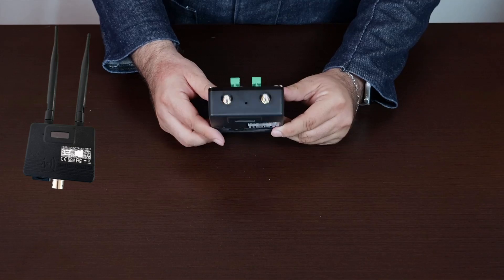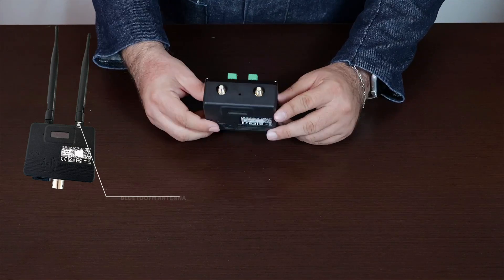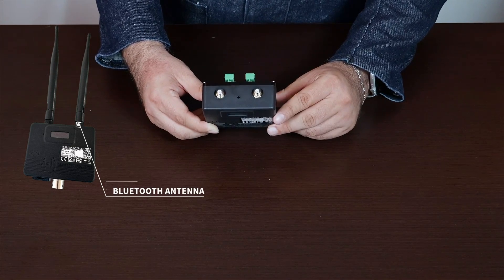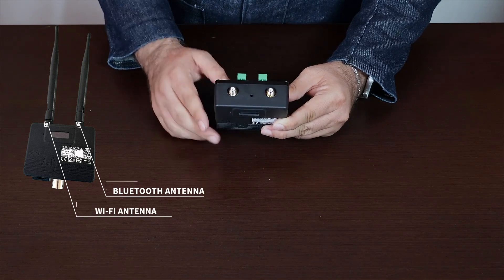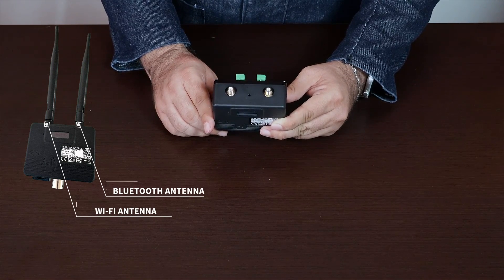At the top, there are two antenna inputs. The right input is for the Bluetooth antenna, which receives data from the phantom sensors. The left input is for the Wi-Fi antenna, which helps to connect to your network wirelessly.